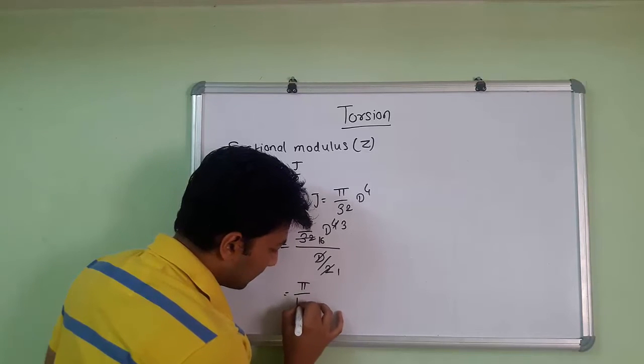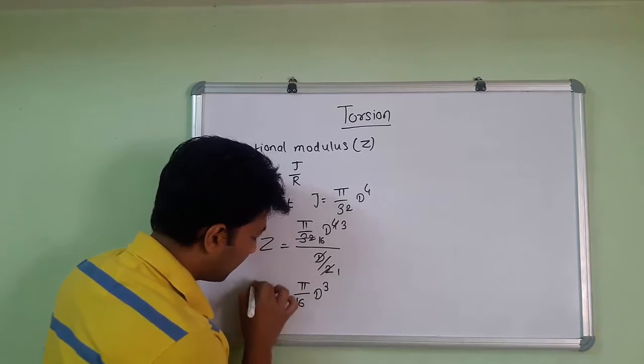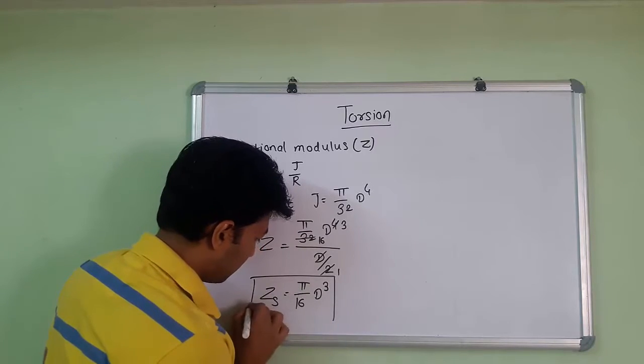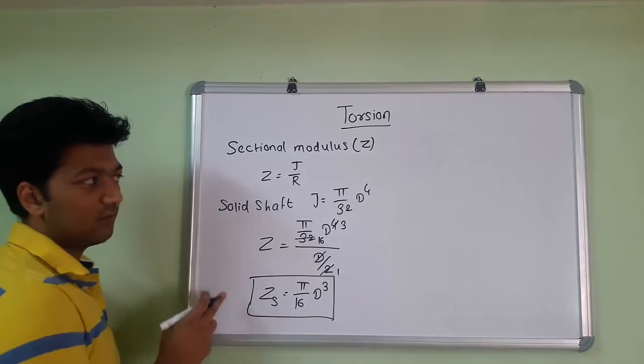That will be pi by 16 d cube. So we can say that Z equals pi by 16 d cube. This is the section modulus for solid shaft.